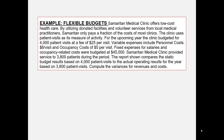Variable expenses include personnel costs and occupancy costs. Fixed expenses for salaries and occupancy-related costs were budgeted at $45,000. Samaritan Medical Clinic provided service to 3,800 patients during the period. The report shown compares the static budget results based on 4,000 patient visits to the actual operating results based on 3,800 patient visits. Compute the variances for revenues and costs.